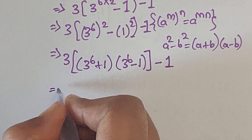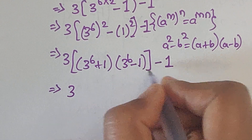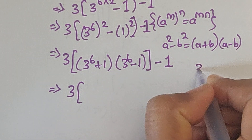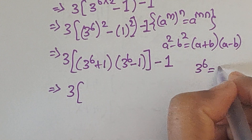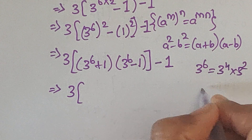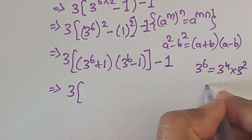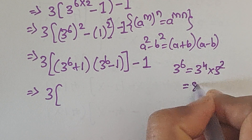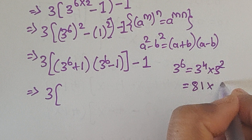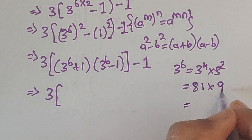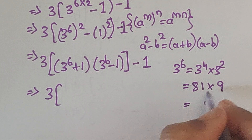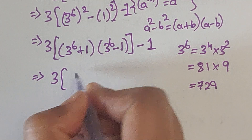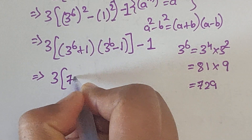Now we need to find the value of 3 to the power of 6. We can write 3 to the power of 6 as 3 to the power of 4 times 3 to the power of 2, since 4 plus 2 equals 6. The value of 3 to the power of 4 is 81 and 3 squared is 9. So 9 times 81: 9 times 8 is 72, giving us 729. So 3 to the power of 6 equals 729.